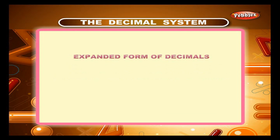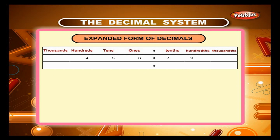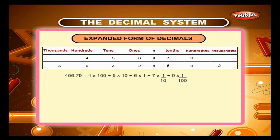Expanded form of decimals. Study the following place value chart of the numerals 456.79 and 3032.602. In the expanded form, 456.79 is equal to 4 × 100 + 5 × 10 + 6 × 1 + 7 × 1/10 + 9 × 1/100, which is equal to 400 + 50 + 6 + 7/10 + 9/100.